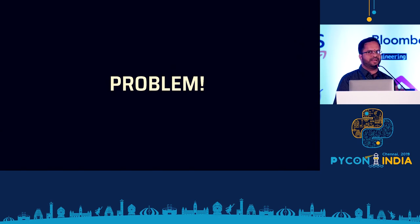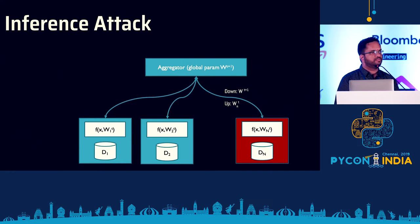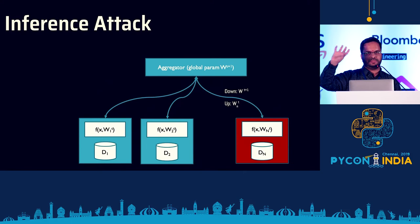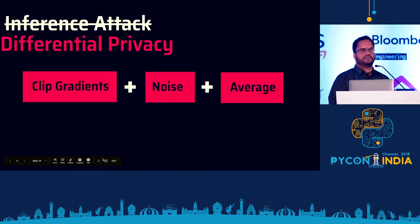This is what happens anyway in distributed machine learning. The problem in terms of privacy is what's called an inference attack. If you're sending only the model updates from a particular device, and you already know what data is coming from that device, it's very trivial to reverse engineer what data came from that device. Once you have the weights from individual devices and you know the model before and after the update, it's very easy to reverse engineer the underlying data. This is solved by what is called differential privacy.